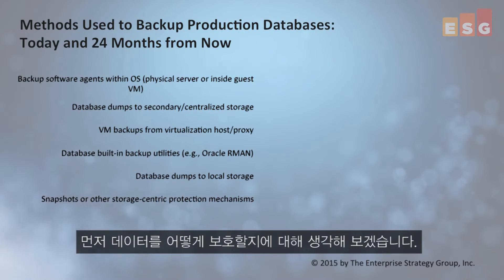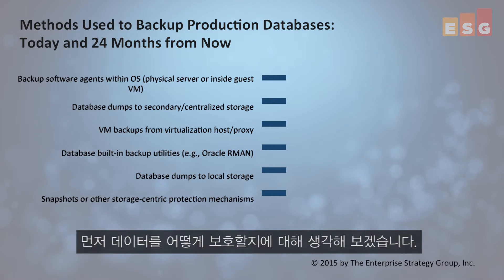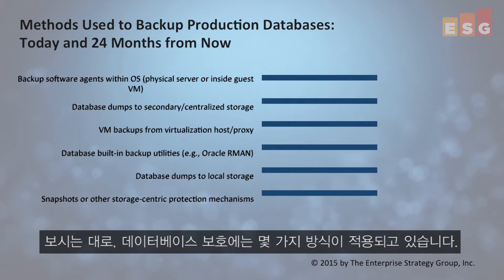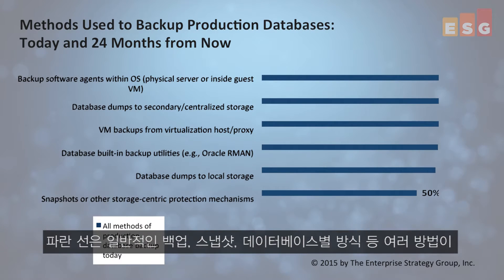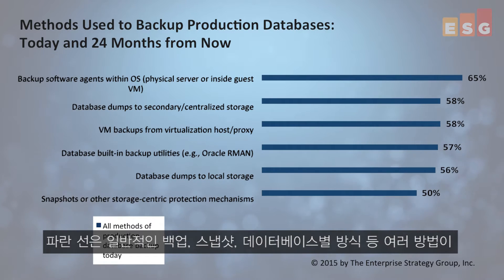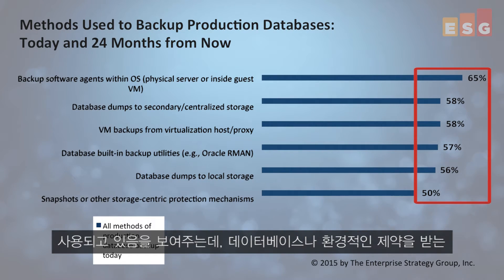Speaking of how the data should be protected, we see several different methods being applied to database protection. The blue lines show that several methods are in use, including traditional backups, snapshots, and database-specific methods, with each being used somewhere within at least half of all environments, based on the unique requirements of those databases or their environmental constraints.